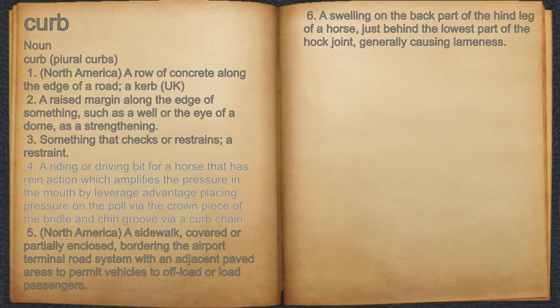4. A riding or driving bit for a horse that has rein action which amplifies the pressure in the mouth by leverage advantage, placing pressure on the poll via the crown piece of the bridle and chin groove via a curb chain.